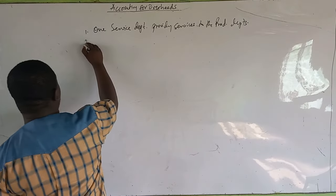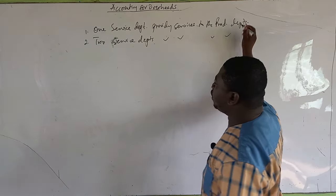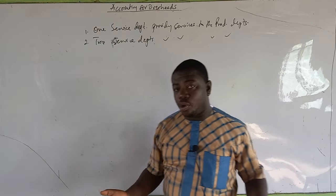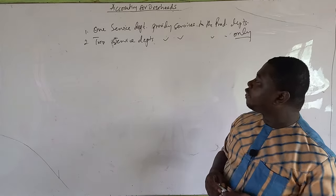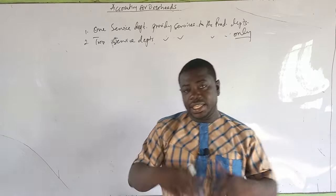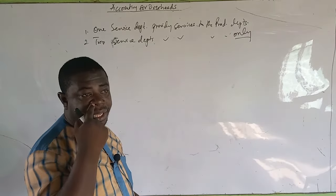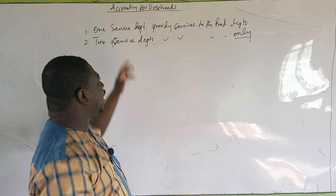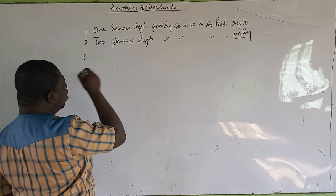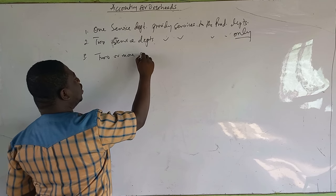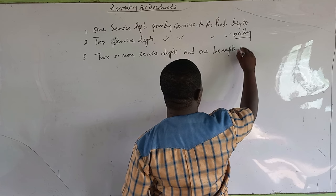That is the first scenario. The second scenario is when you have two service departments providing services to the production department. If you have two or more service departments providing services to the production department only — and the key word here is 'only,' meaning the services these service departments provide is for the production department only — then still the total overheads of those service departments will be charged or reapportioned to the production department at the end. There is also a third scenario where you have two or more service departments and one benefits from the services of the other.